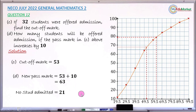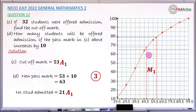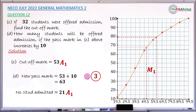Mark distribution for questions (c) and (d): 1 method mark for reading the cutoff mark from the graph, plus 1 accuracy mark for 53 (or 52 or 54 accepted). For question (d), 1 accuracy mark for getting 21 students (20 or 22 also accepted). Questions (c) and (d) carry 3 marks in total.